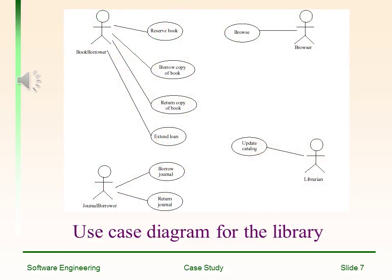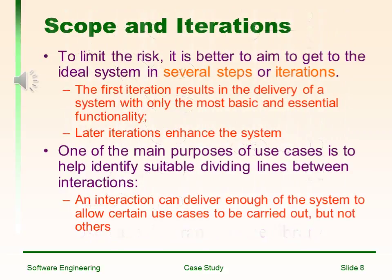Use case diagram for the library. Scope and iteration: to limit the risk, it is better to aim to get to the ideal system in several steps or iterations. The first iteration results in the delivery of the system with only the most basic and essential functionality; later iterations enhance the system. One of the main purposes of use cases is to help identify a suitable dividing line between iterations. An iteration can deliver enough of the system to allow certain use cases to be carried out but not others.